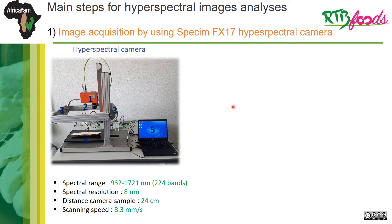Now I will detail each of these steps. The first step is image acquisition using a Specim FX70 hyperspectral camera. The equipment includes: the camera, a lens, illumination lamps, a mobile sample holder, and a laptop with software for image acquisition and parameter settings. The spectral range of this camera is 932 to 1721 nanometers with 224 bands, a spectral resolution of 8 nanometers, a camera-to-sample distance of 24 centimeters, and a scanning speed of 8.3 millimeters per second.